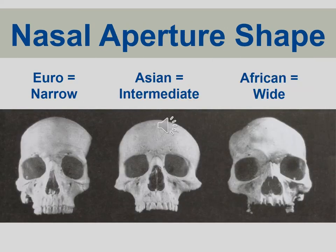When you look at the shape of the nasal aperture — and we're not quite sure why this happens — we know that the environment has the greatest influence on the facial part of the skull. What we notice is that in Europeans or Euro-American ancestry, the nasal shape is very narrow. In African heritage, it's usually a little wider and broader, and Asian people are typically intermediate.